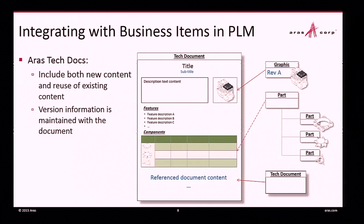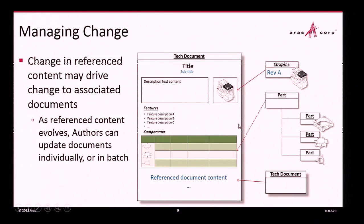When you do that, you have a link not just between the document and the parts or graphics, but between those items and specific elements within the document. As those parts evolve, you know what documents are affected at a granular level, and when you open the document you know where the information is used. You then have the ability to either accept the change or ignore it. The next time an author edits the document, they'll know the graphic has been updated and can decide what to do with it — but this only works if you've established those associations.